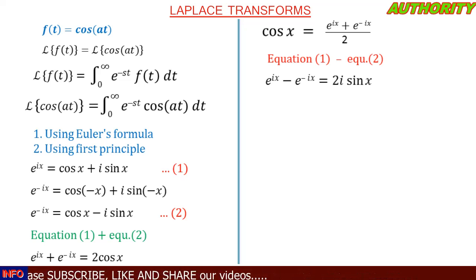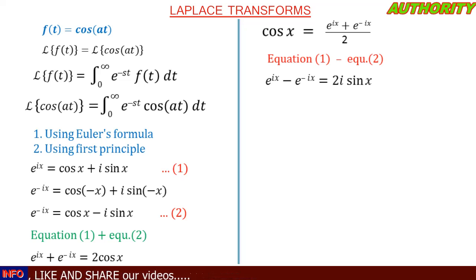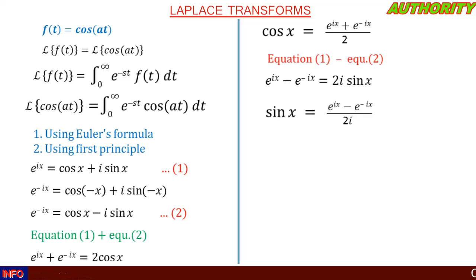For equation one minus equation two, the right-hand side gives cos(x) minus cos(x) which is zero, leaving us with 2i·sin(x). Making sin(x) the subject by dividing both sides by 2i, we get sin(x) equals e^(ix) minus e^(−ix) all over 2i.